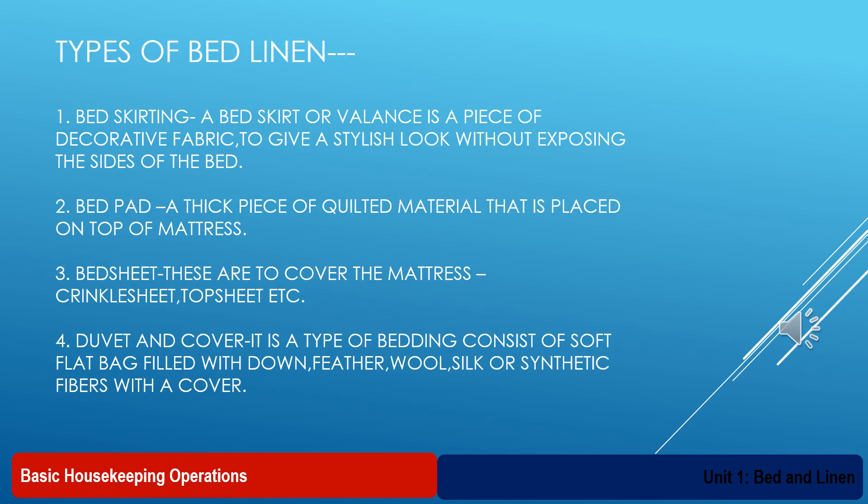For bed making in a guest room, we need various types of bed linens. Following are some of the bed linens used to make a bed. Number one, bed skirting — a bed skirt or valance is a piece of decorative fabric to give a stylish look without exposing the sides of the bed. Number two, bed pad — a thick piece of quilted material that is placed on top of the mattress. Number three, bed sheet — these are used to cover the mattress; for example, crinkle sheet, top sheets, etc. Number four, duvet and cover — it is a type of bedding that consists of a soft flat bag filled with down, feather, wool, silk, or synthetic fibers, which are covered.